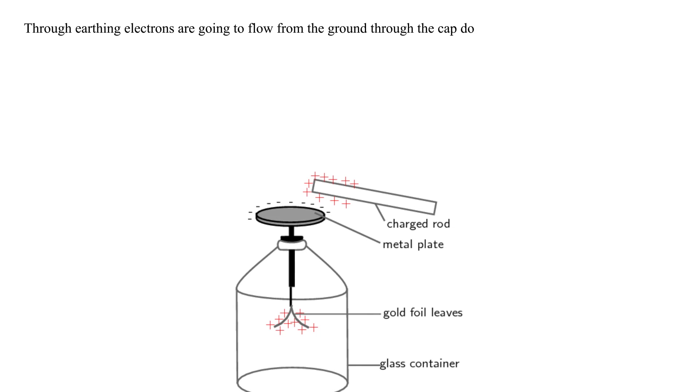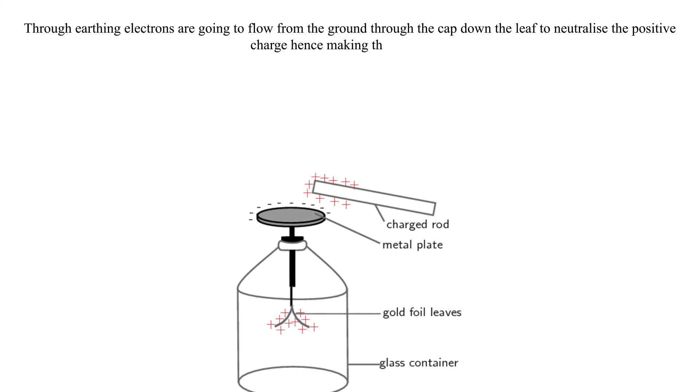Through earthing, electrons are going to flow from the ground through the cap down the leaf to neutralize the positive charge, hence making the leaf fall.